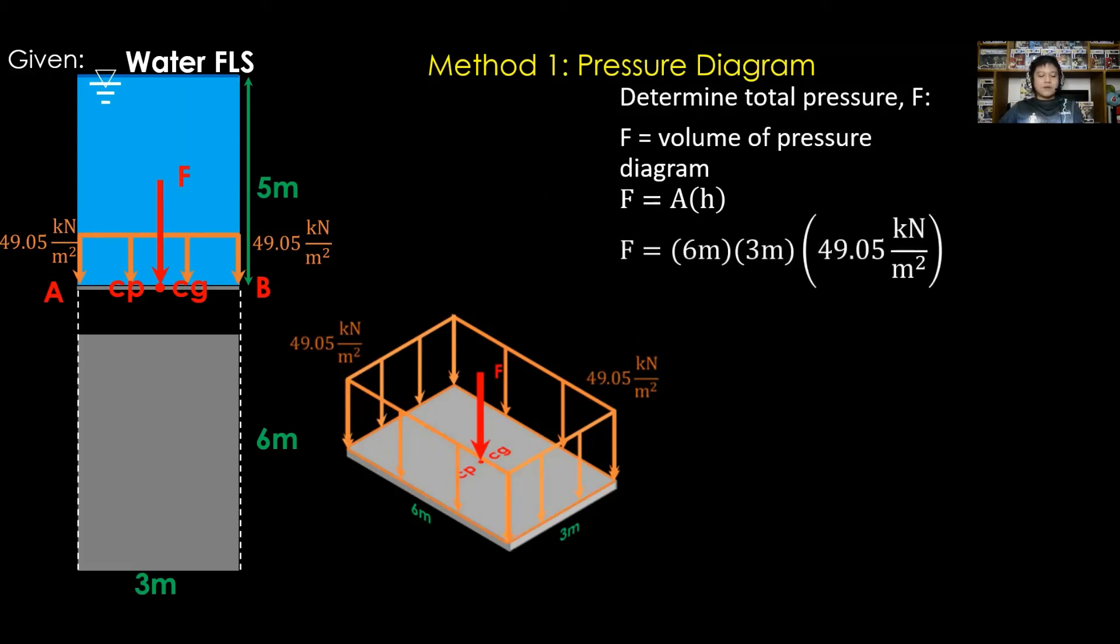Substitute the values. We have the area A as 6 by 3, then multiply to the intensity that is 49.05 kilonewtons per square meter. Therefore, F is equal to 882.9 kilonewtons, that is downward, with respect to our surface.